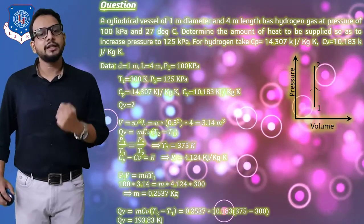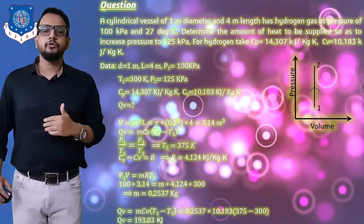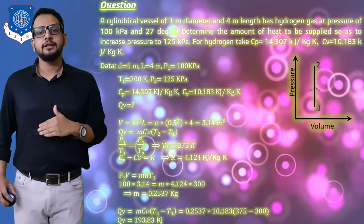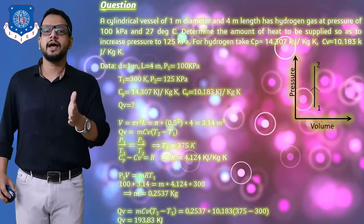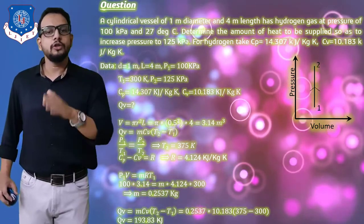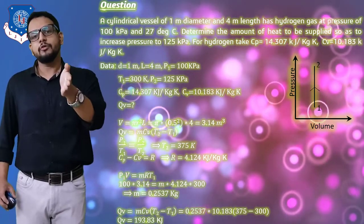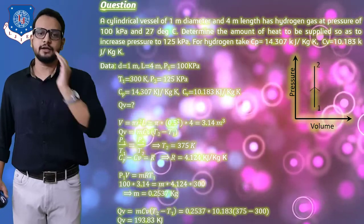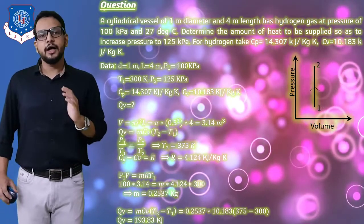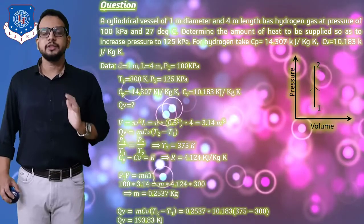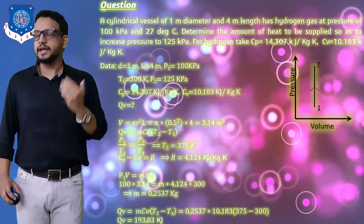Now substituting into the heat transfer formula Qv = m·cv·(T2 - T1), we get the final answer of 193.83 kJ. This is the heat supplied at constant volume to increase the pressure of hydrogen gas from 100 kPa to 125 kPa. In our next session we will start with the constant pressure process. Please stay tuned and thank you all.